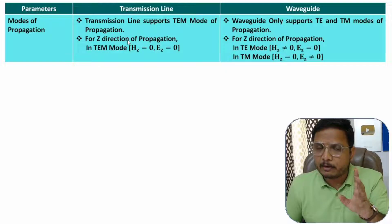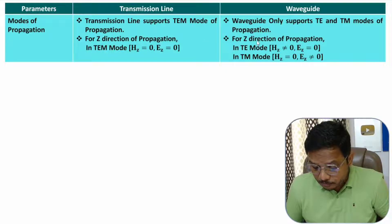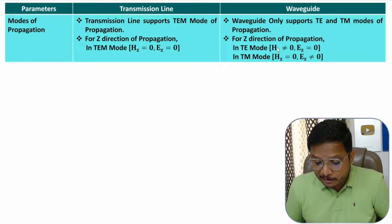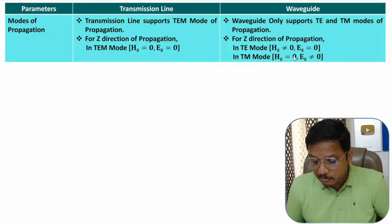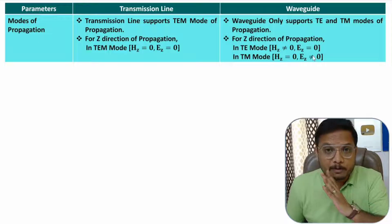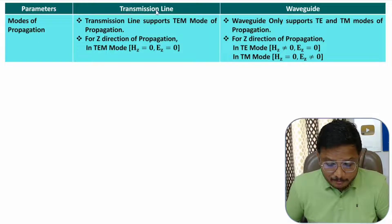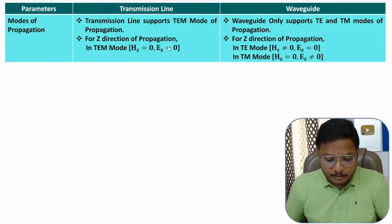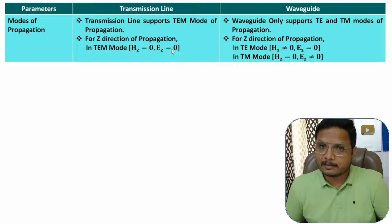In TE mode, the electric field in the direction of propagation will be zero while the magnetic field component is not zero. With a waveguide, TEM mode is not possible; the waveguide supports TE and TM modes. In a transmission line, TEM mode is supported, meaning in the direction of propagation the electric and magnetic fields are zero.